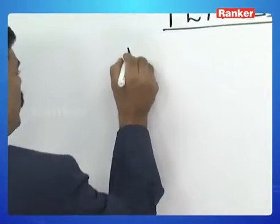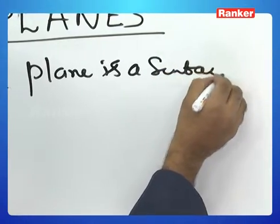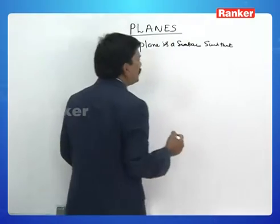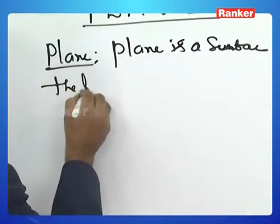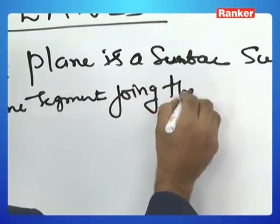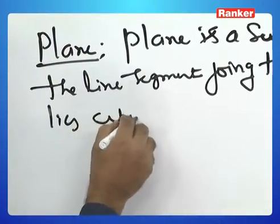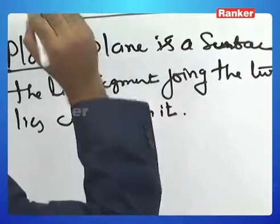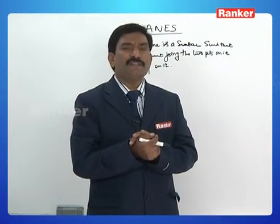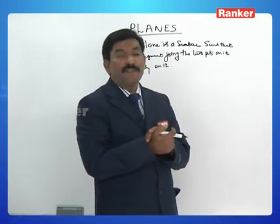So, the definition of a plane: a plane is a surface such that the line segment joining any two points on it lies only on that surface. The surface satisfying this property is called a plane.